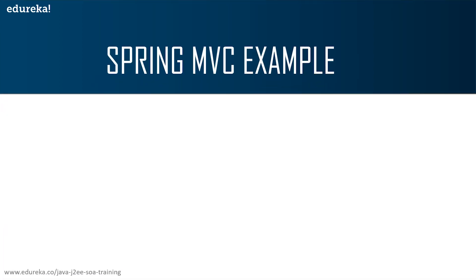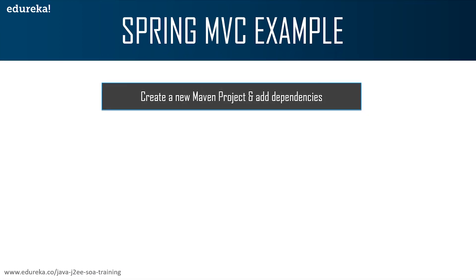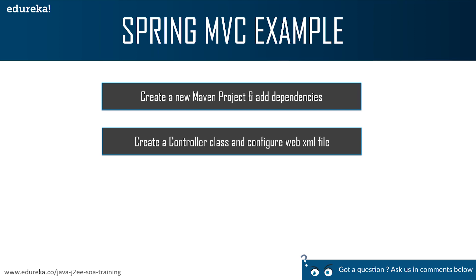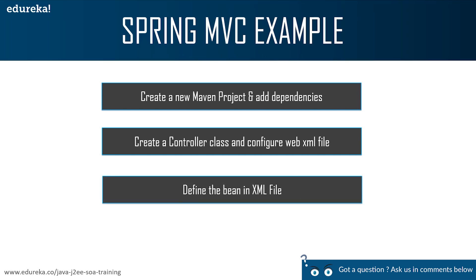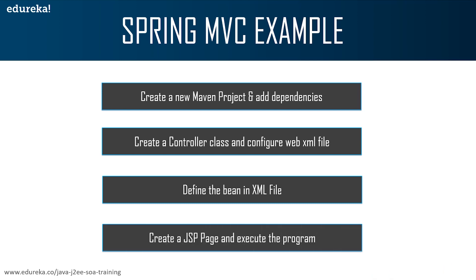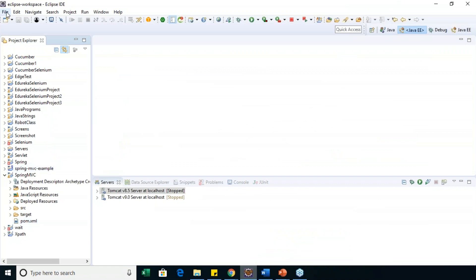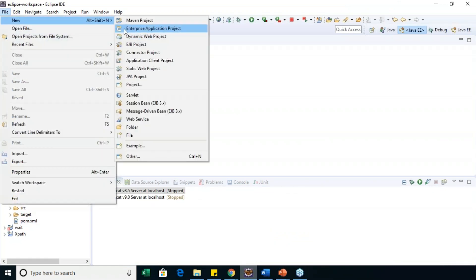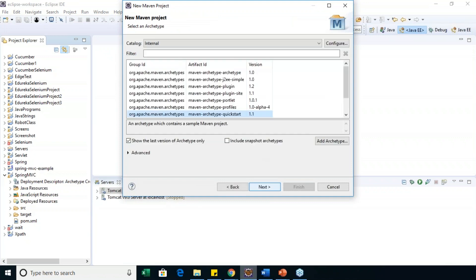Now let's look at a small example of Spring MVC. There are various steps: first you need to create a new Maven project and add all the dependencies, then create a controller class, configure the web.xml file, define the bean in the XML file, create a JSP page, and execute the program. To create a Maven project in Eclipse, go to File, click New, choose Maven project, click Next, and select Maven Archetype webapp because you are creating a web application.